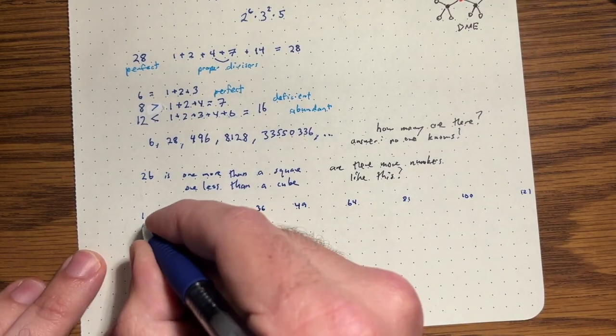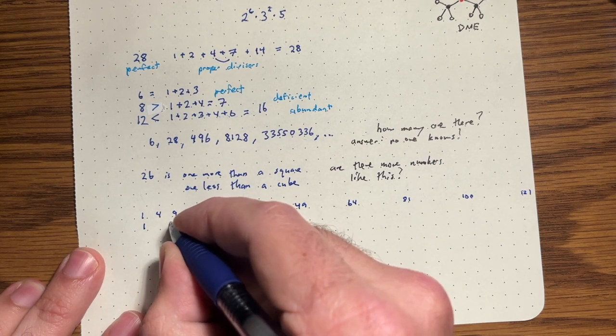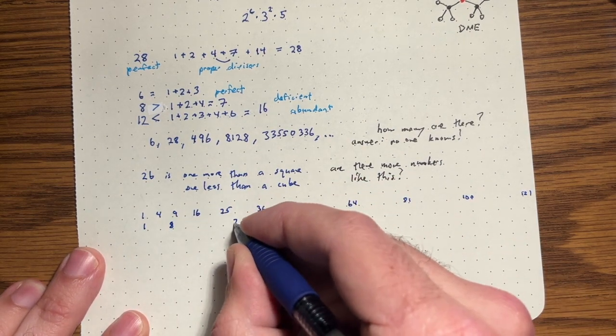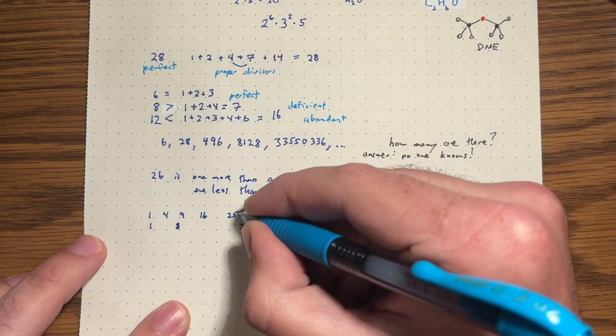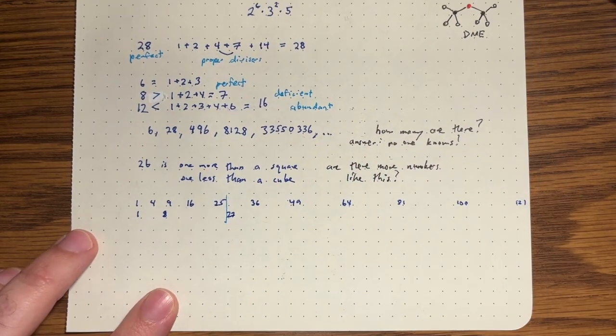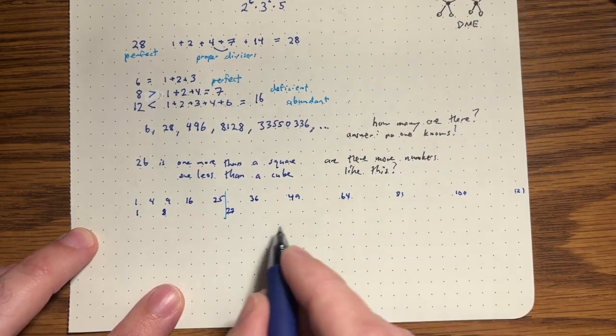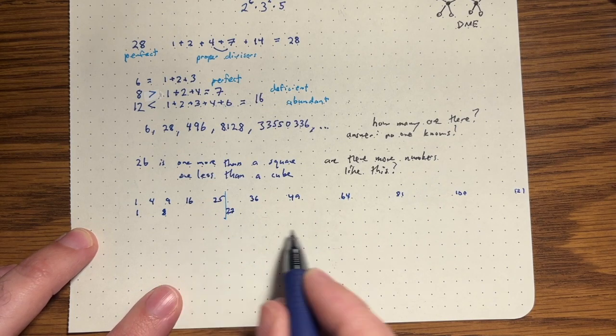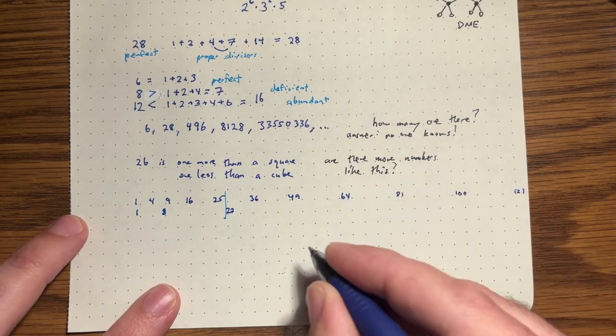And we can try to write out the cubes. So one, eight is a cube, 27. That's over here, it's 26 or it falls right here in the middle, 25 and 27. And we can try to notice how close together are these two types of numbers getting?